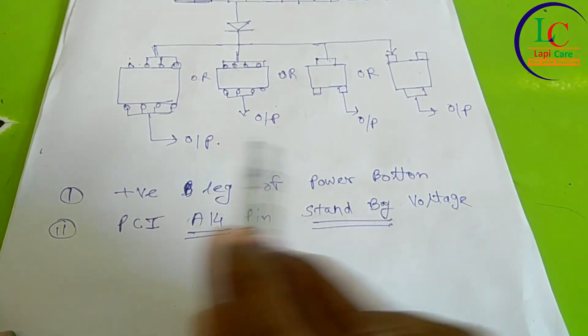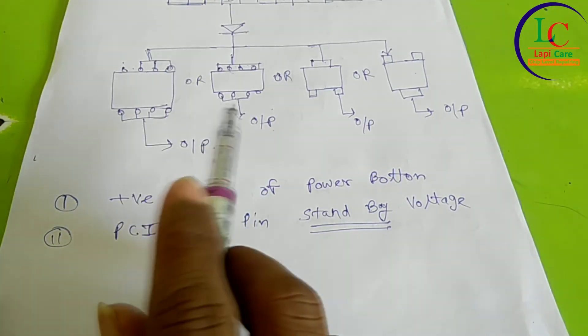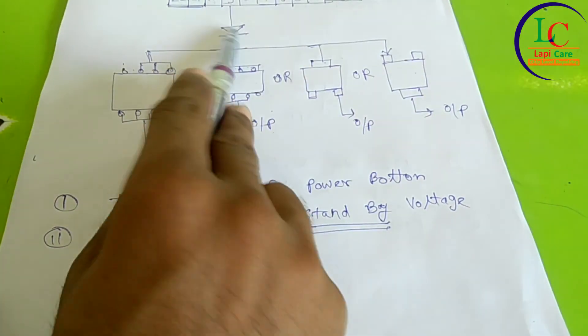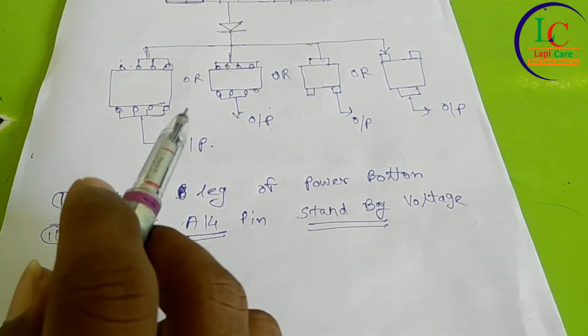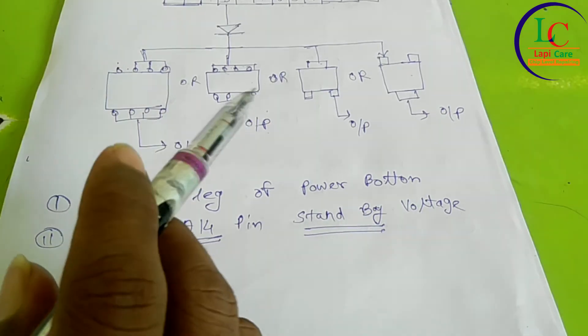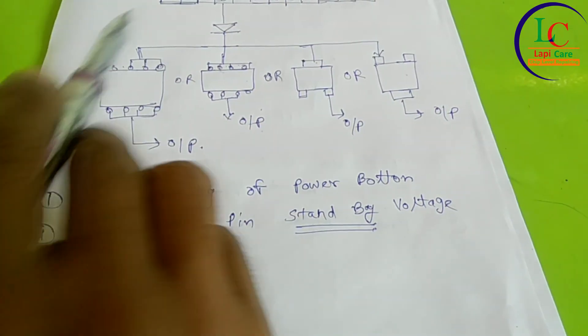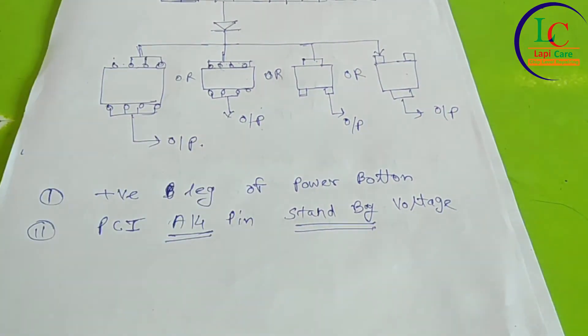If there is no standby voltage, then we have to check for this MOSFET or this diode or nearby capacitor. We have to trace the path and check for each and every component. Whether or sometimes the SMPS also may be faulty. So also check the SMPS.